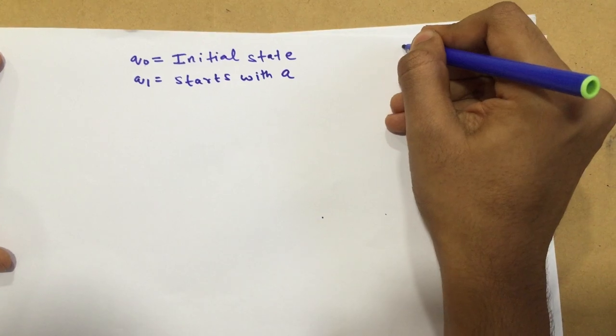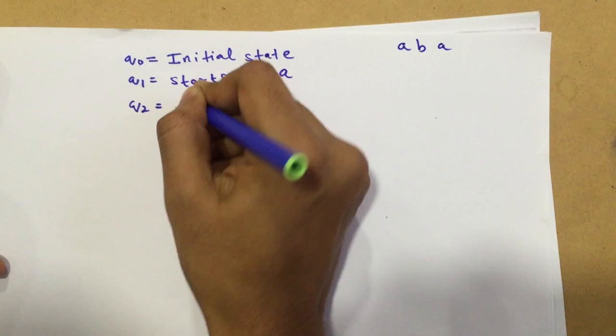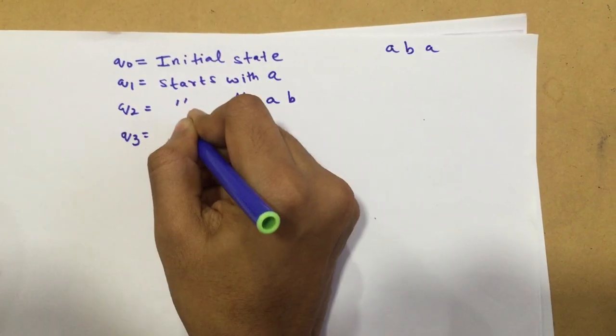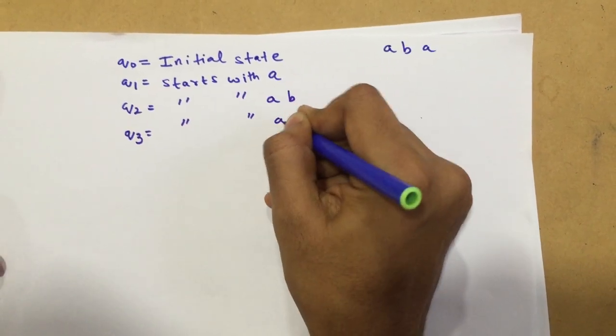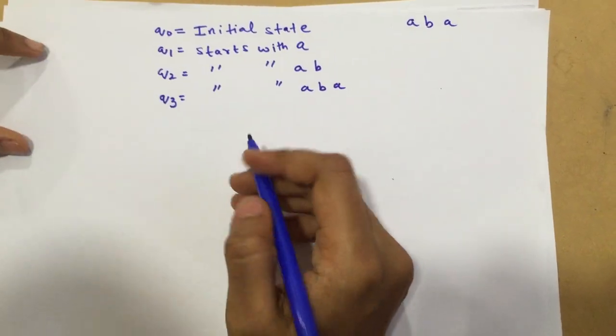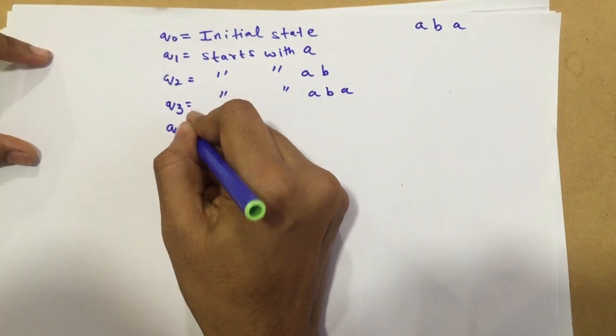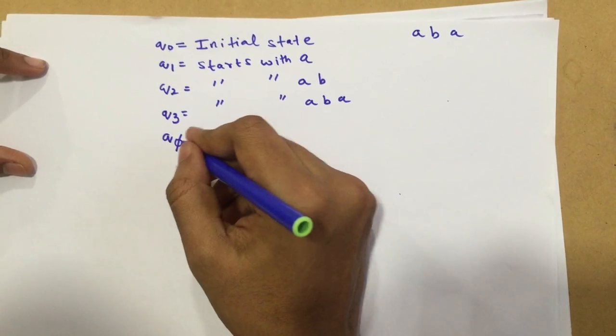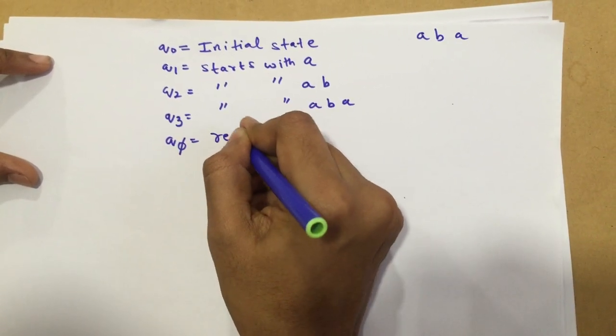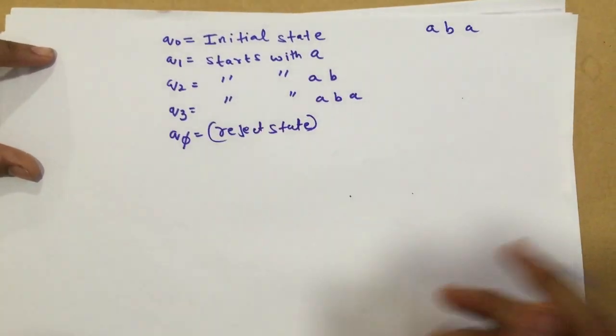Q1 is a state which starts with A. Remember, we have to find a DFA for strings starting with ABA. Q2 will be a state which starts with AB and Q3 is a state which starts with ABA. Also, in this problem, the only difference from the last problem where we did with the ending is we take a null state, Q5, where if the string is not starting with ABA, we will put the string in this state. This is also called my reject state.